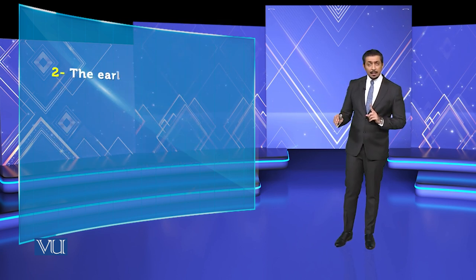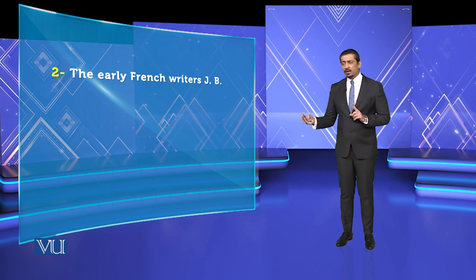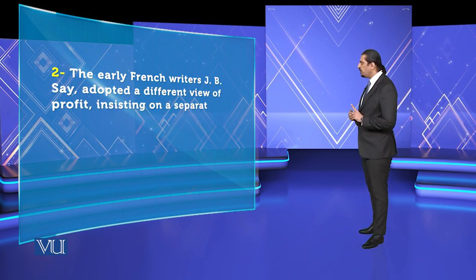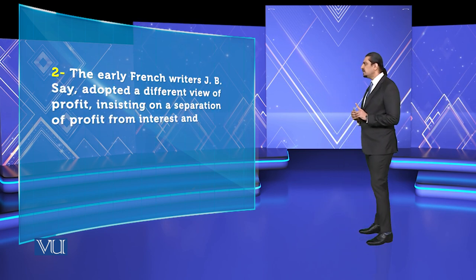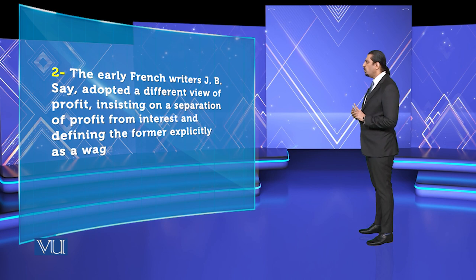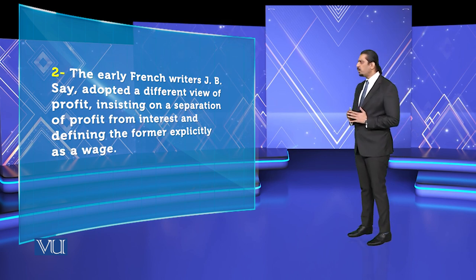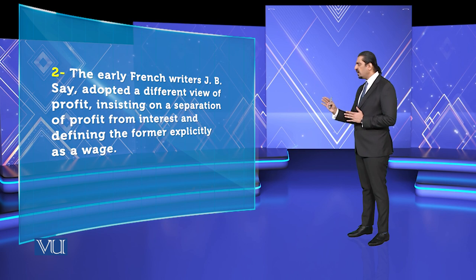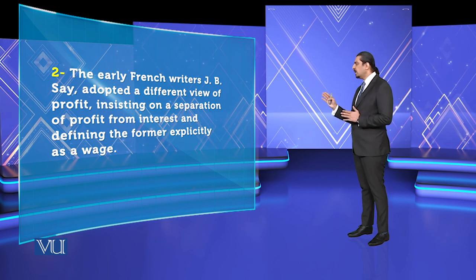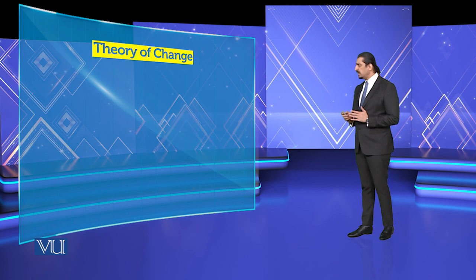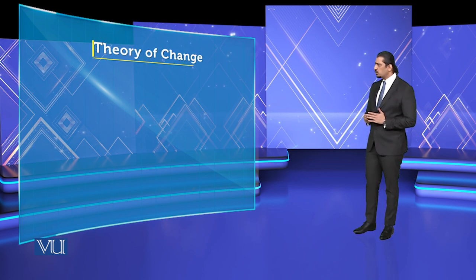The early French writer J.B. Say adopted a different view of profit, insisting on a separation of profit from interest and defining the former explicitly as wage. Now let us look further at where this theory takes us.